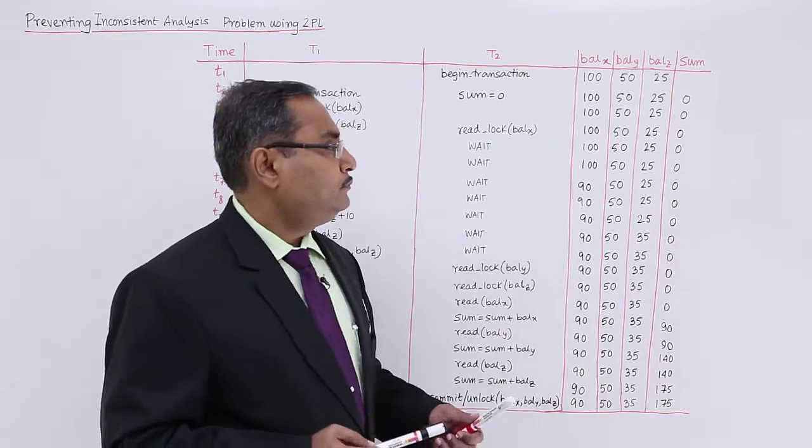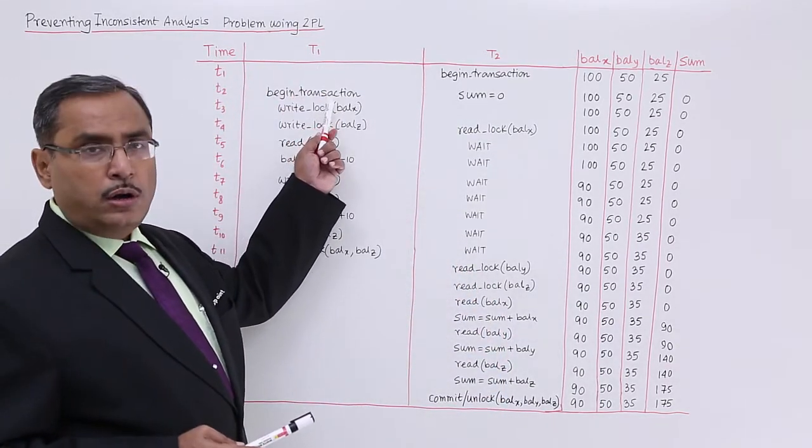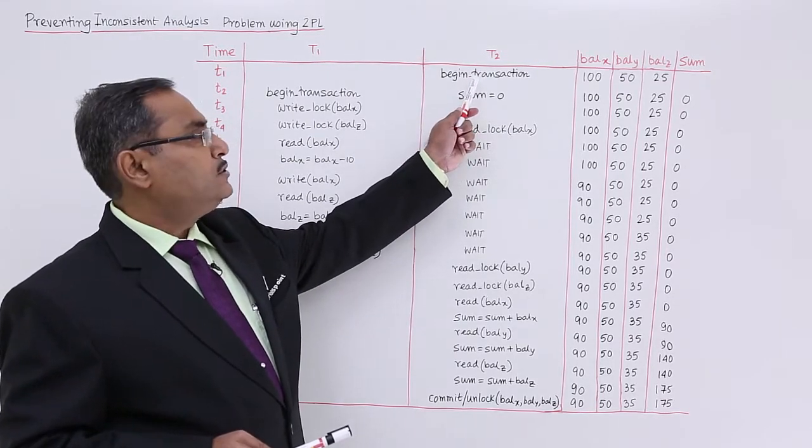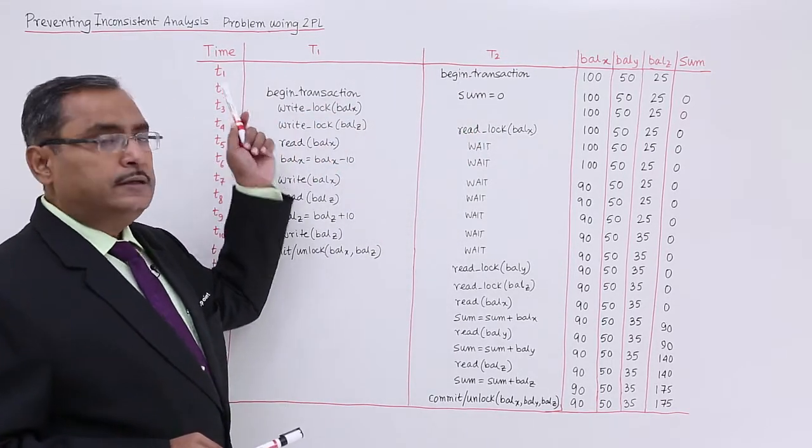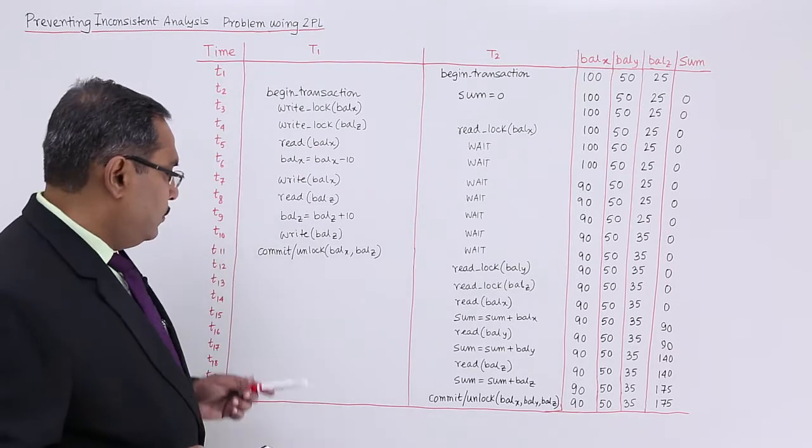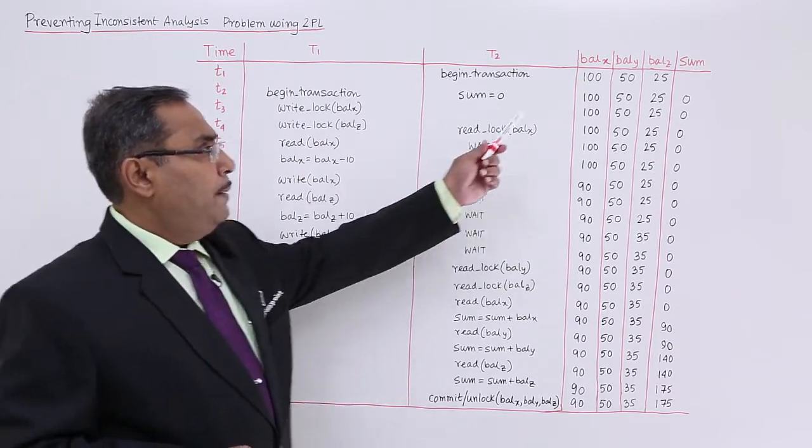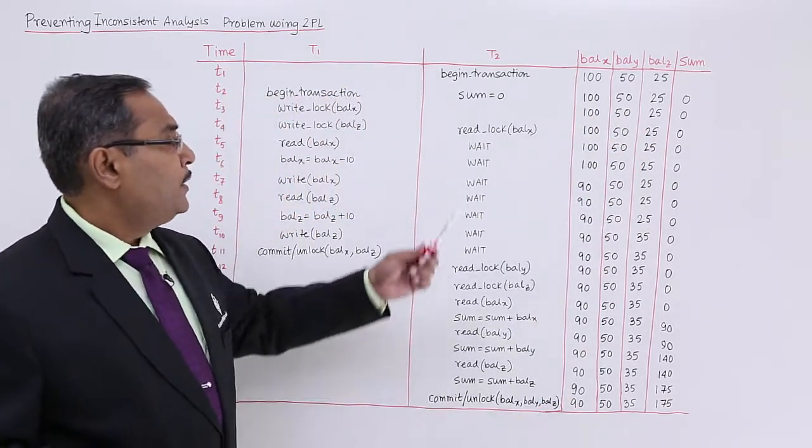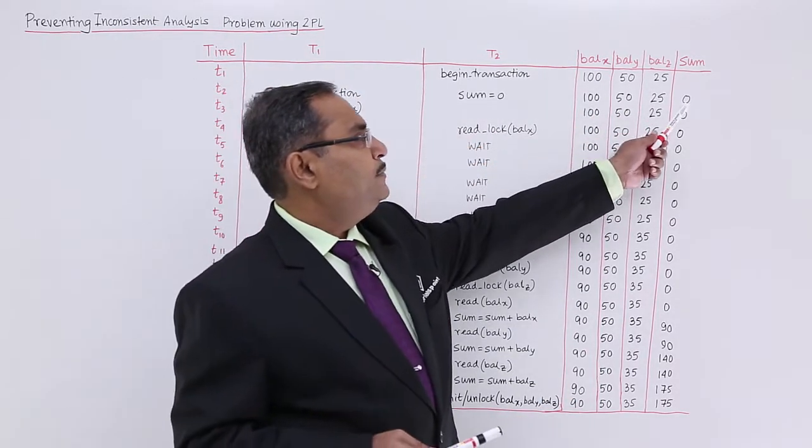We are having transaction T1, which is the younger one, and another transaction T2, which is the older one because it has got initiated at instant T1. Now these are two full tables we are having: balance X, balance Y, and balance Z. Initial values are there. Sum is going to be zero. Sum has been initialized with zero.